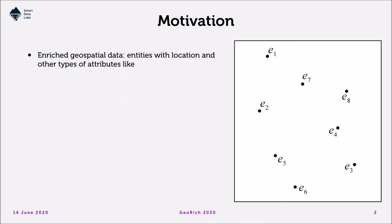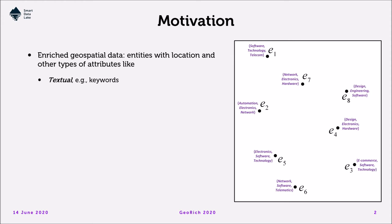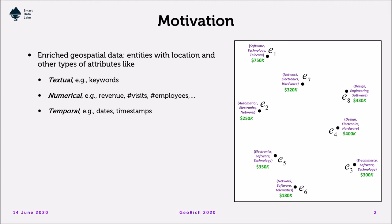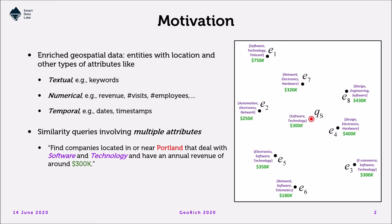We consider enriched geospatial data — for example, points of interest regarding companies or tourist attractions — that apart from their location include other types of attributes like textual keywords defining the industrial sector of a company, numerical ones with information about revenue or number of employees, and perhaps temporal ones with dates and timestamps important in the company's lifecycle. Our concern is to answer similarity search queries involving multiple attributes, not just the spatial ones, but also the textual, numerical, or temporal ones.